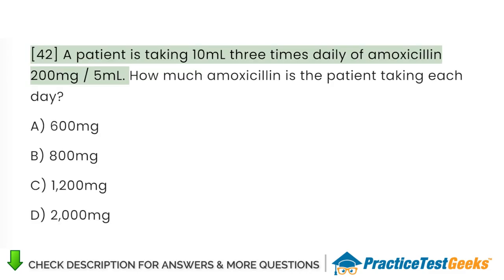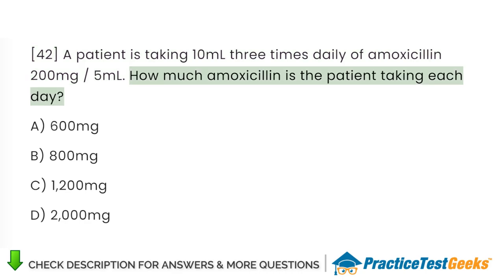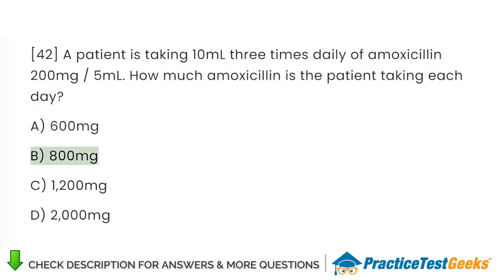A patient is taking 10 mL 3 times daily of amoxicillin 200 mg/5 mL. How much amoxicillin is the patient taking each day? A. 600 mg. B. 800 mg. C. 1,200 mg. D. 2,000 mg.